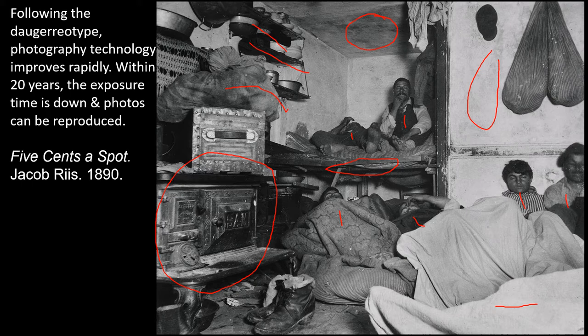Jacob Riis took these photos and printed them in the newspaper. He also wrote a book with the photos and went on a speaking tour. New Yorkers were so upset about the conditions of immigrants that changes were made. It wasn't just Jacob Riis, and it wasn't fast necessarily, but Jacob Riis was a major force in the change in housing and safety regulations for New Yorkers.